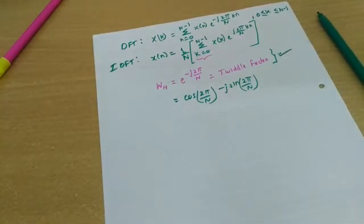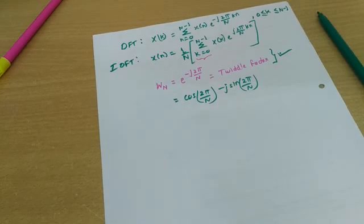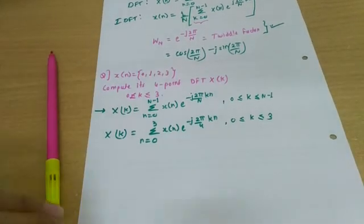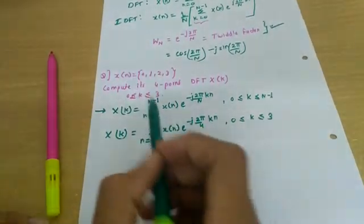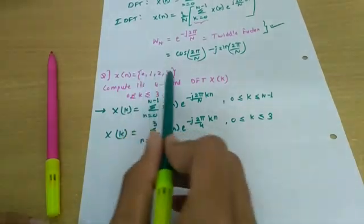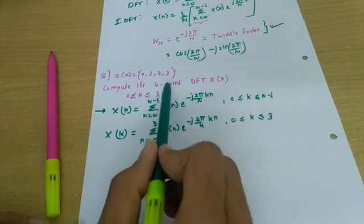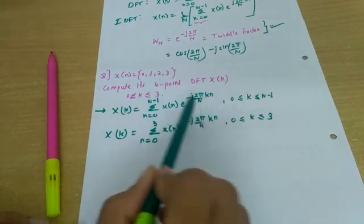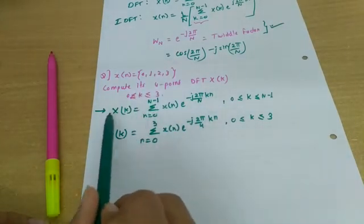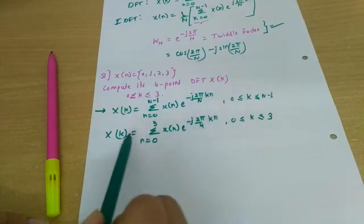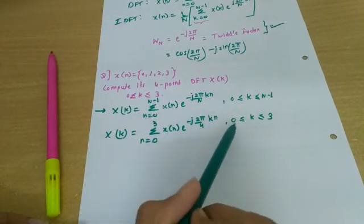Now let's move directly to examples. In the first example, a sequence is given and we have to compute its four-point DFT, that is N equals 4, so k also equals 4. Writing the DFT definition and separating out N equals 4, we obtain a specific expression.